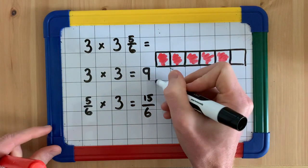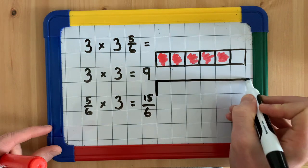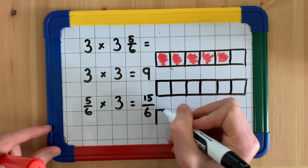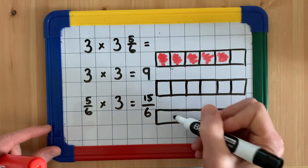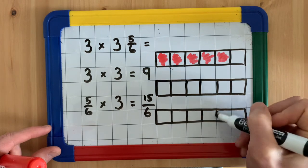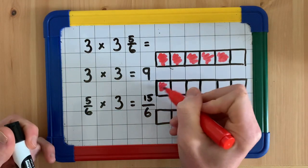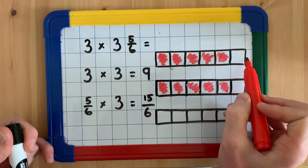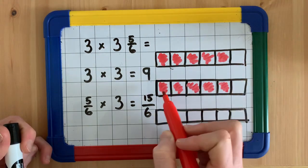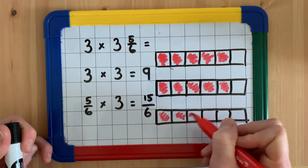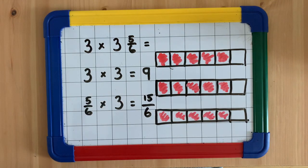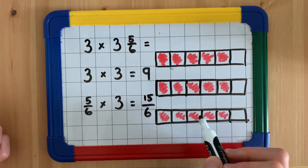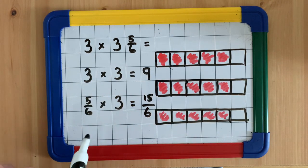Now if we have 3 lots of 5/6, so I'm drawing out here, we can see that we'd end up with 15/6. So 1 5/6, 2 5/6, 3 5/6. So that makes 1, 2, 3, 4, 5, 6, 7, 8, 9, 10, 11, 12, 13, 14, 15, 15/6. Great.